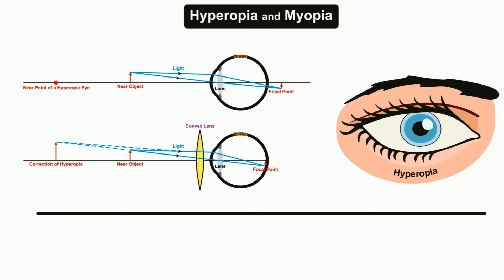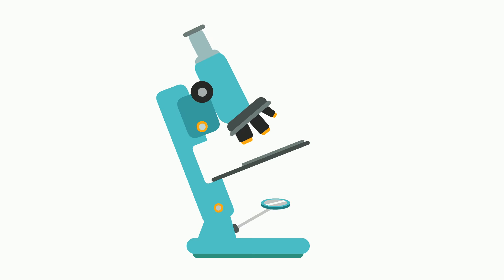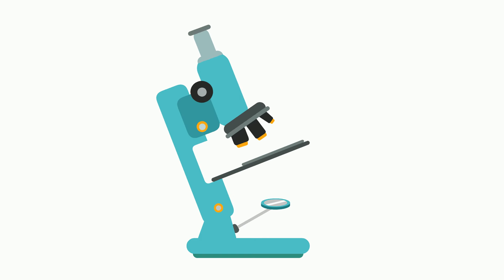Other examples that use convex lenses include a microscope and a telescope.